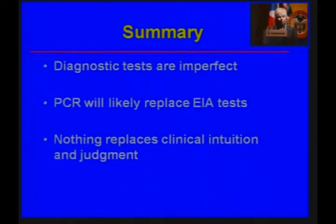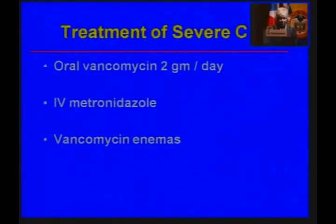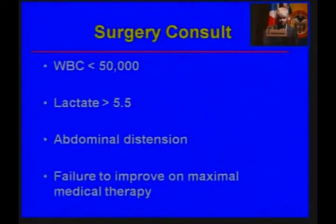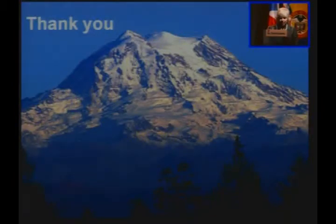In summary: diagnostic tests are imperfect, and I predict PCR testing will replace EIA testing in the United States within the next few years, but nothing replaces your clinical intuition and judgment. Treatment of severe disease should rely on high-dose oral vancomycin, the addition of IV metronidazole, and the addition of vancomycin enemas. Get a surgery consult if the white blood cell count is greater than 50,000, the lactate is greater than 5, the abdomen is distended, or your patient isn't getting better on maximal medical therapy. Thank you so much for your attention.